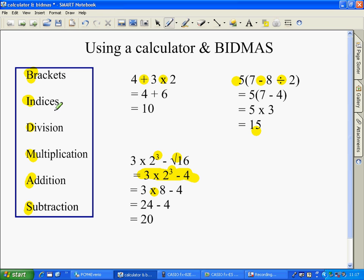We do the times first because multiplication is before subtraction. 3 times 8 is 24. 24 minus 4 is 20.